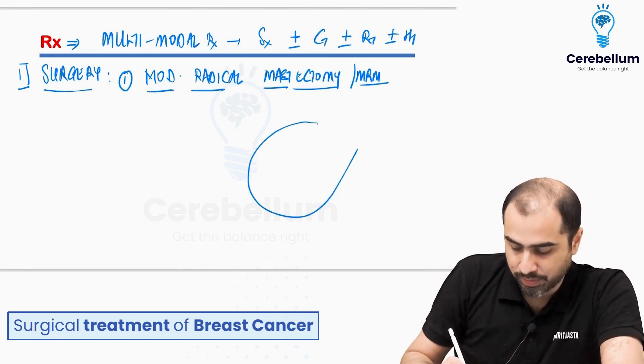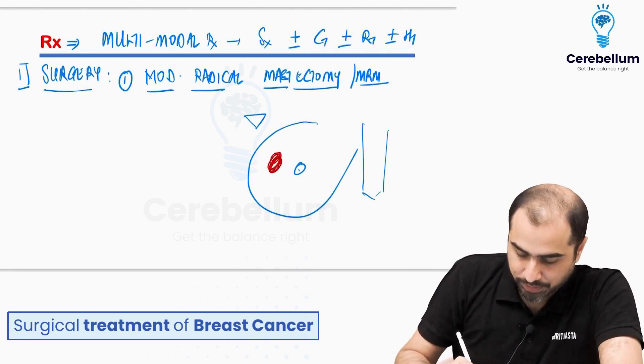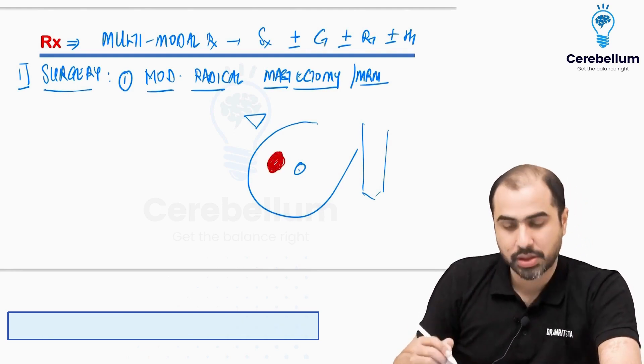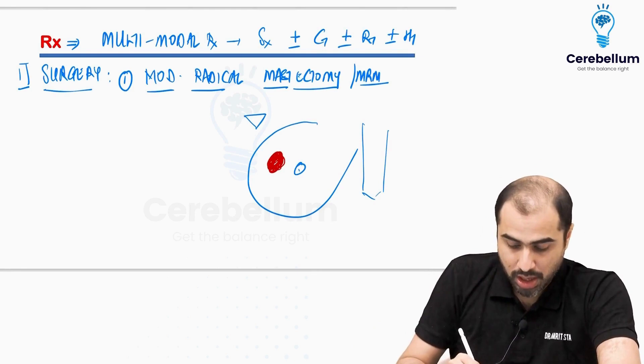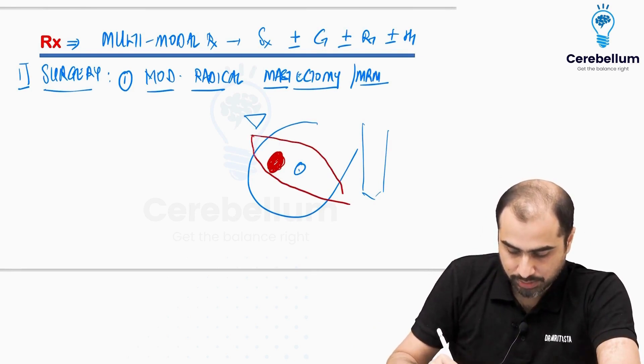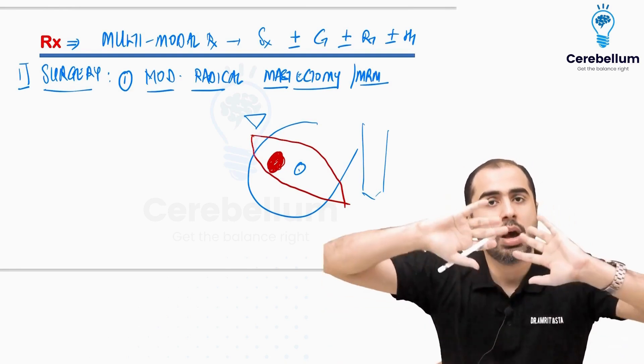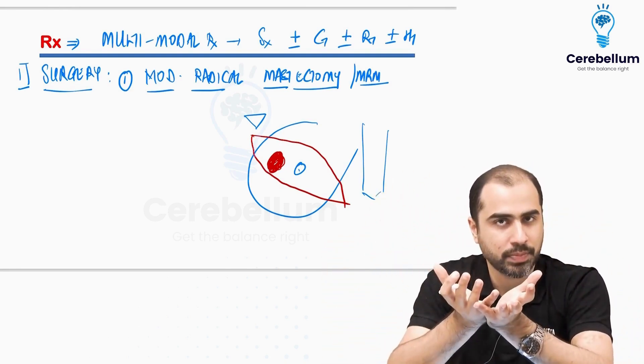So what is modified radical mastectomy? It simply means, let's say this is the breast, this is the axilla, this is the sternum in the midline, and there is a tumor over here in the inside of the breast. I am going to take a nice big incision on the breast like this, that's the incision on the skin. Then I go inside and core out the whole breast.